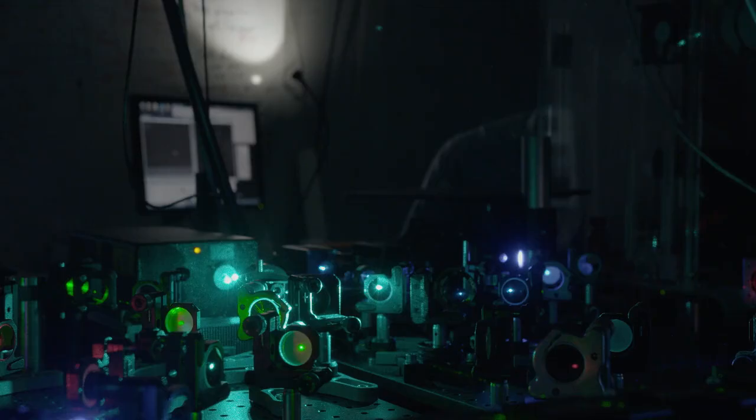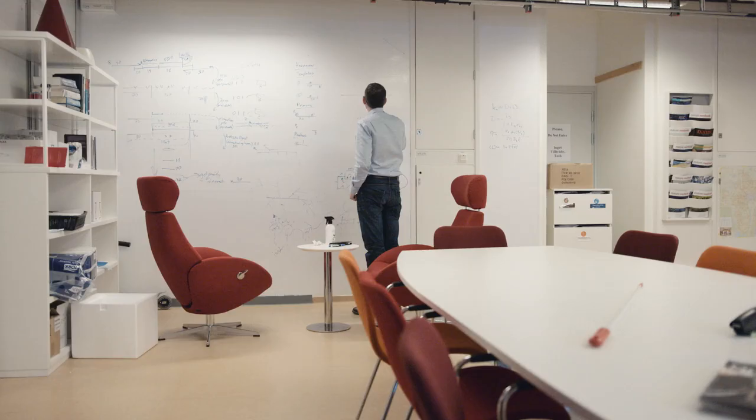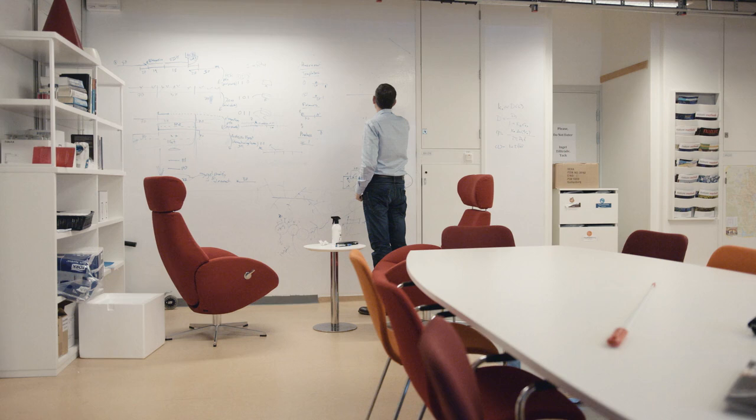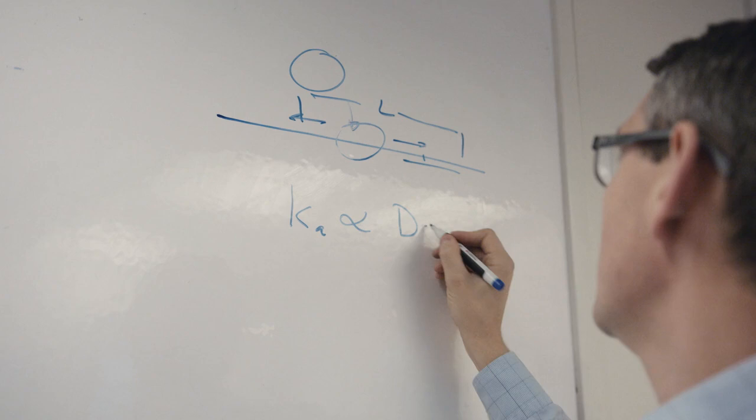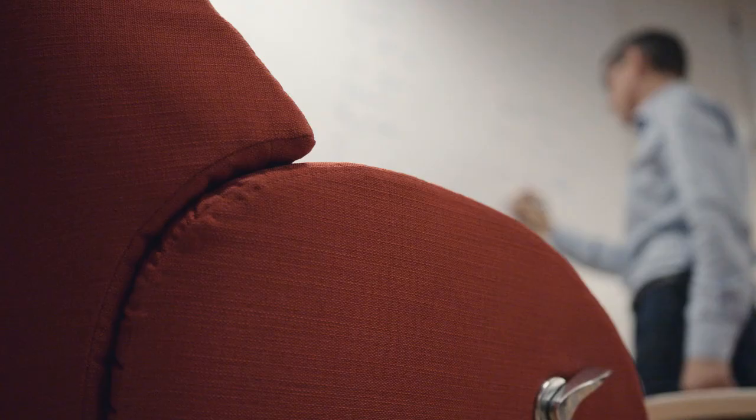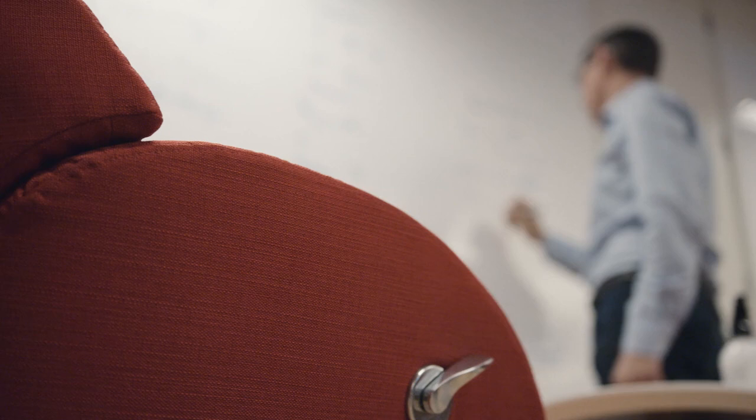Johan takes the results from the films of the cell interior back with him to his calculations. He can now correct them in order to obtain a more accurate mathematical model. This knowledge can then help other research groups understand and counteract the errors that can occur when the cell reads its DNA.